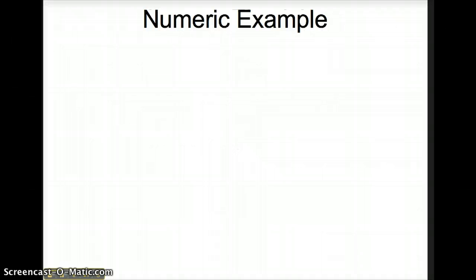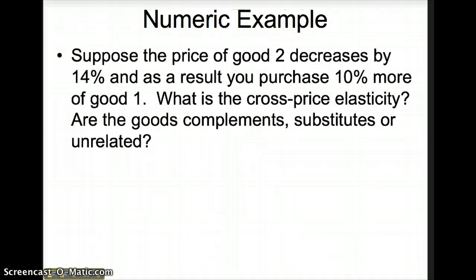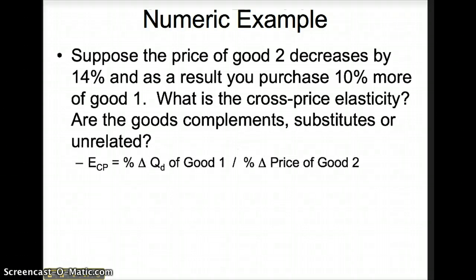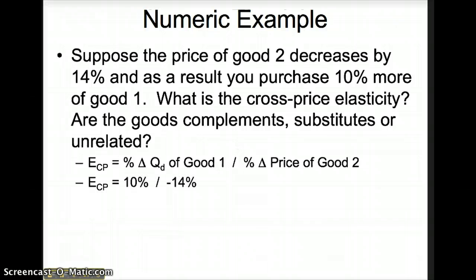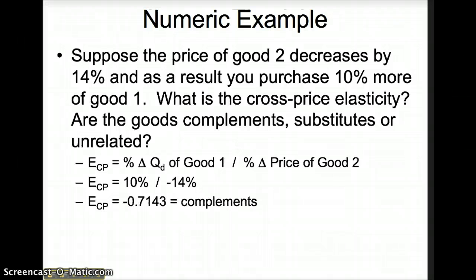Suppose the price of good 2 decreases by 14% and as a result you purchase 10% more of good 1. What is the cross-price elasticity coefficient and are the goods complements, substitutes, or unrelated? Cross-price elasticity of demand equals the percentage change in quantity demanded of good 1 divided by the percentage change in price of good 2: 10% divided by negative 14%, giving a coefficient of negative 0.7143. Therefore, the two goods are complements.